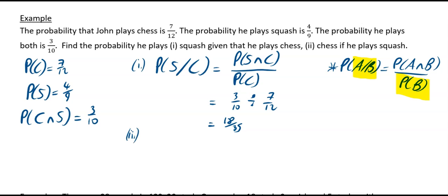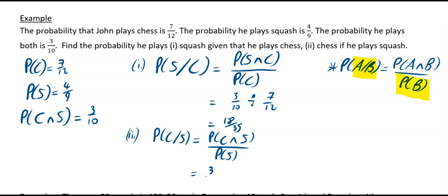For part 2, we want the probability he plays chess given he plays squash, which is P(C intersect S) divided by P(S). That is (3/10) divided by (4/9), and if you do that on your calculator you get 27/40.